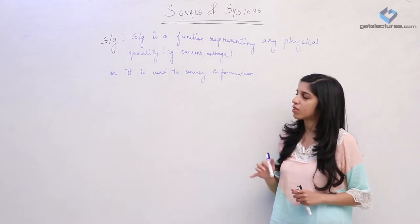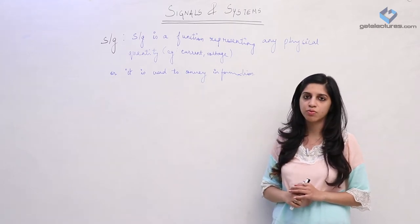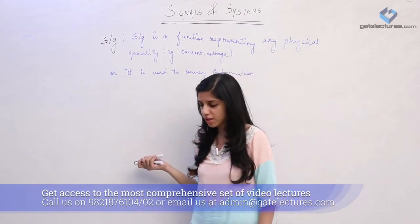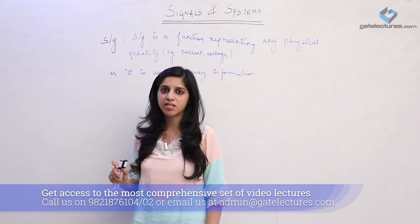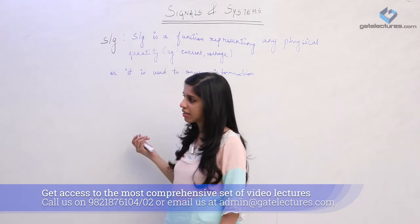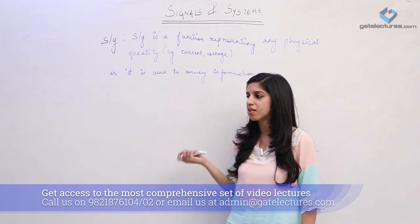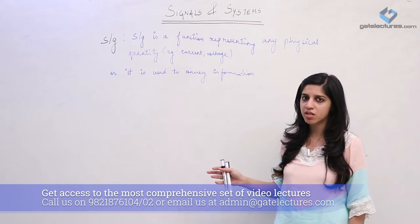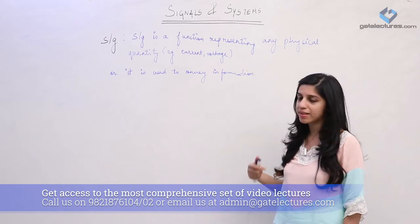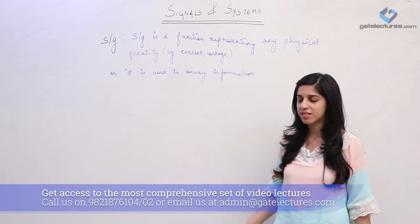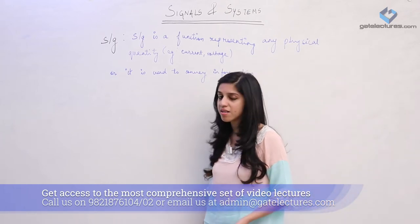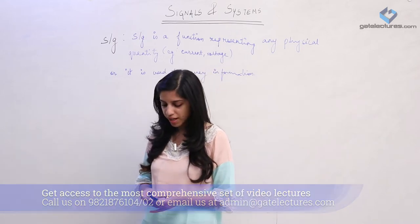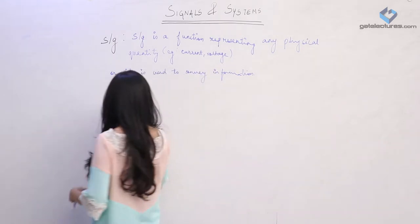There are a lot of classifications for signals that we are going to see. On many different bases we can classify signals - like analog or digital signal, continuous or discrete signal, energy signal, power signal, real signal, and complex signal. We are going to look at the classification of signals one by one. In the next lecture we are going to look at different basic signals that we use again and again.